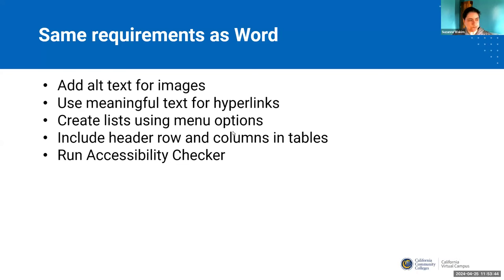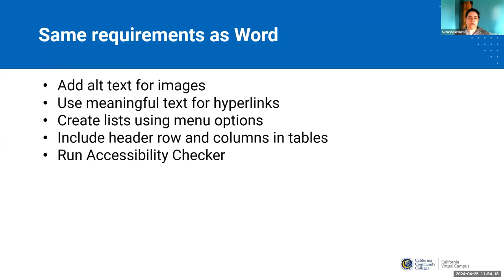So for PowerPoint, kind of the same as Word — alt text, same sort of thing. Because it's a Microsoft product, the icons will look very similar. There was a question about Google — the strategies for doing this in Google are again very similar; the icons look very similar. One of the issues with Google is it doesn't have an accessibility checker, which is an issue. You can download a plugin called Grackle, which is okay — it has a paid version which is better. All of that is to say: everything we're showing you here for Word is very similar across pretty much any platform you're using.